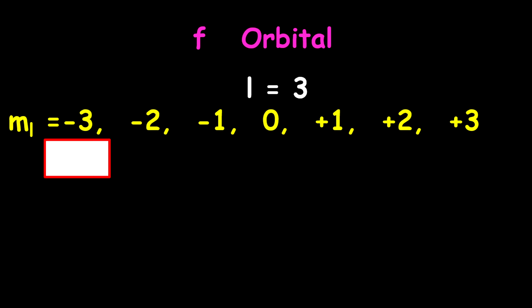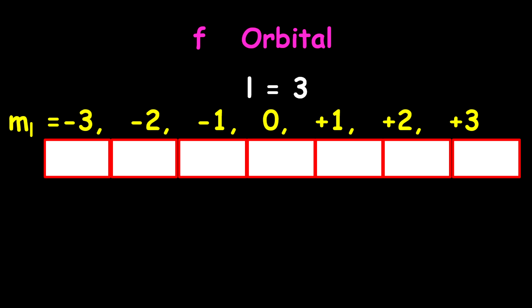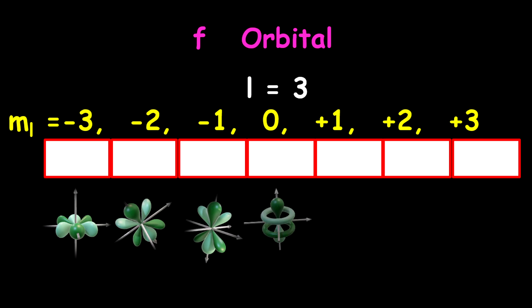For our f-orbital, the l-value is 3, and therefore our ml values are minus 3, minus 2, minus 1, 0, positive 1, positive 2, and positive 3. Therefore, there are seven specific orbitals and seven specific orientations based on the axis. As they come in, we're going to describe as well where we can actually find each of these orbitals.